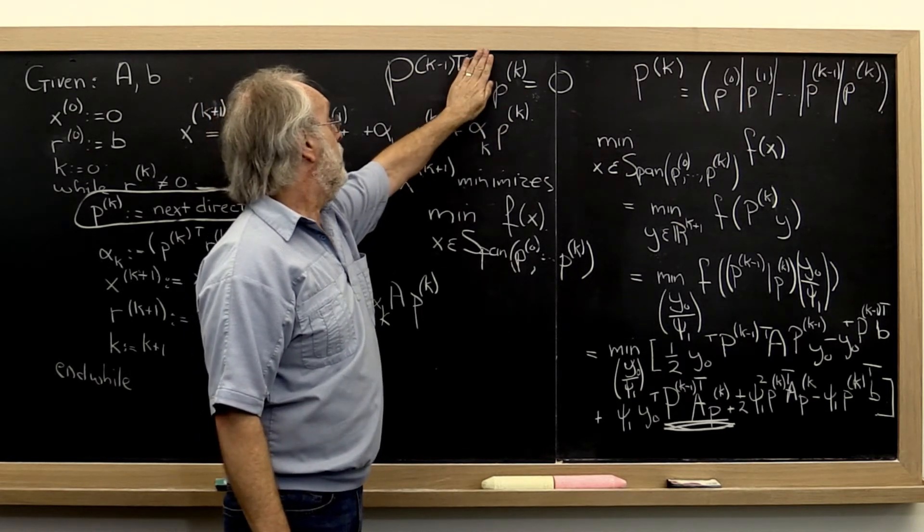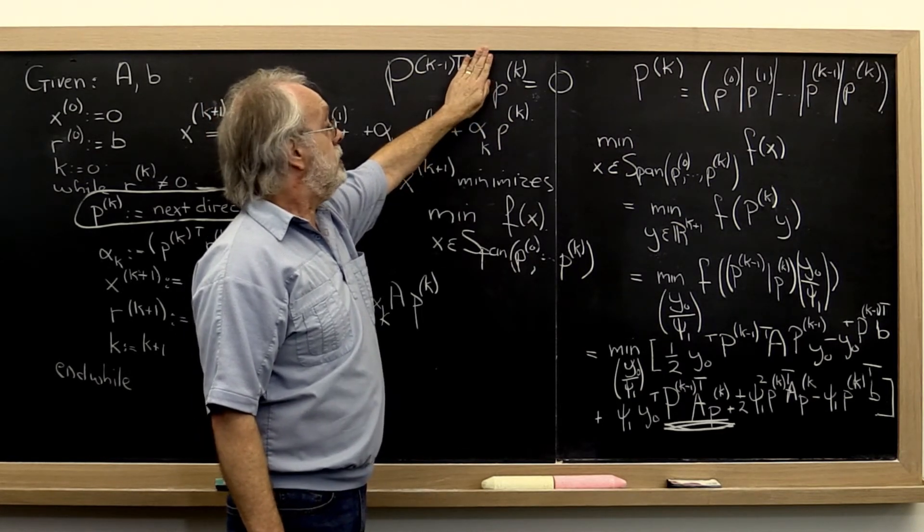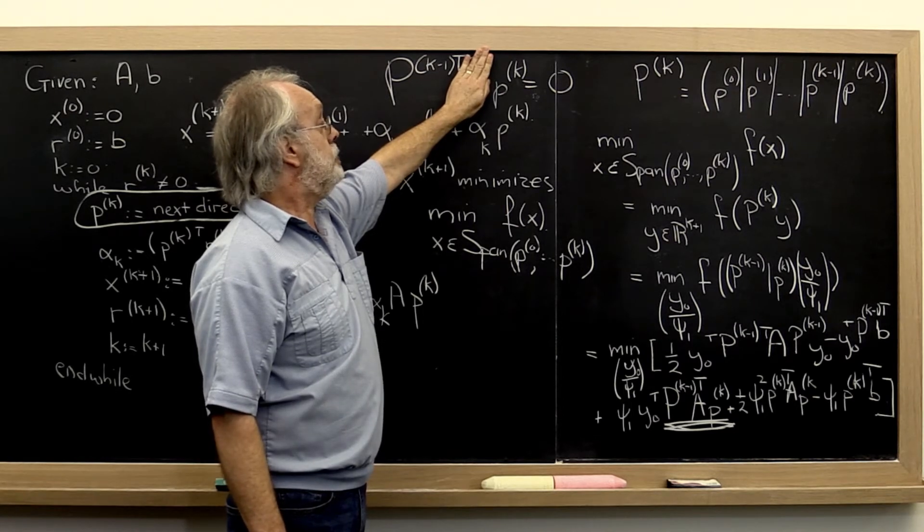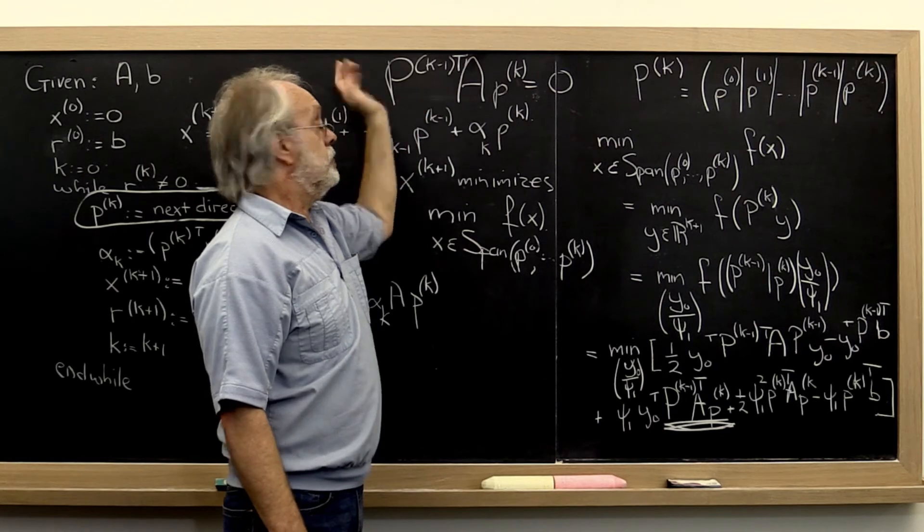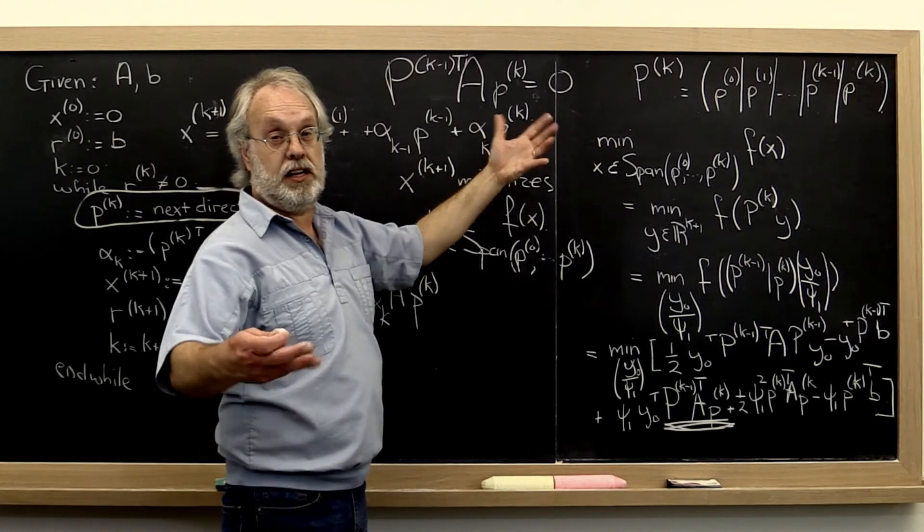Now if we took a away, then this would say that our next search direction is orthogonal to all of the previous search directions. We've seen that kind of thing before.